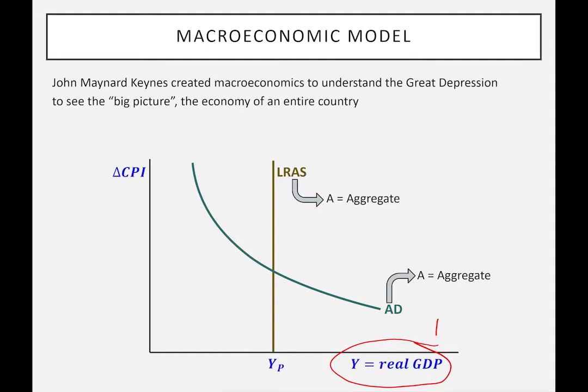We'll start with GDP, then move to CPI, then LRAS — probably three or four lectures on that — and finally AD, which will take up a large part of the course. Incidentally, Keynes was very concerned about aggregate demand (AD). He didn't really have CPI in his model, and although he used the letter Y, he didn't have GDP as such — that came along later. So the model is more complex and sophisticated than he originally sketched out.